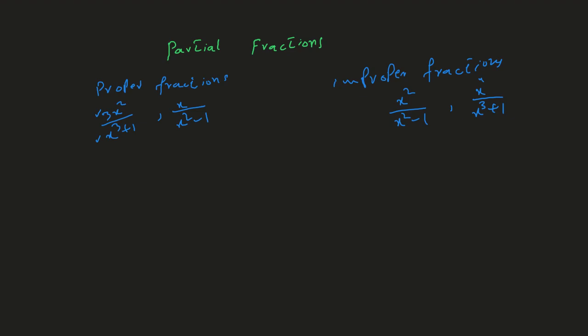If the degree of the polynomial in the numerator is equal to or greater than the degree of the polynomial in the denominator, that is called an improper fraction. For example, if the degree on top is 2 and the degree on the bottom is also 2, or the degree on top is 4 and on the bottom is 3, those are both improper fractions.